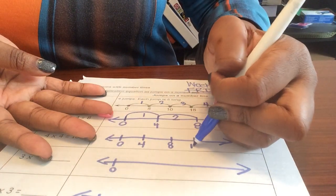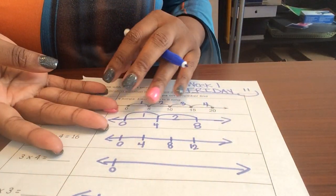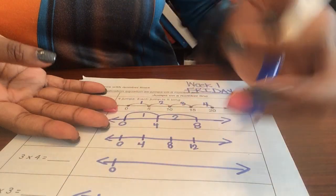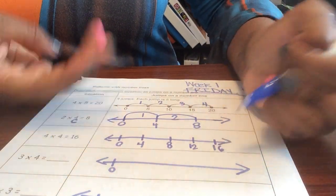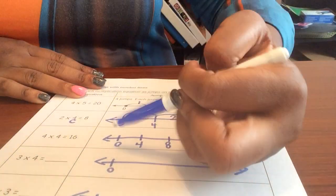And we said four jumps, so this is jump one, two, three, and four, and we end at 16.